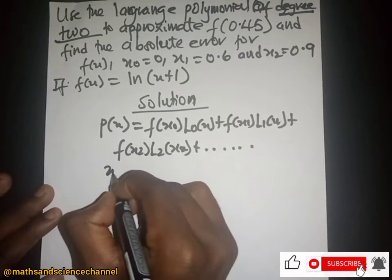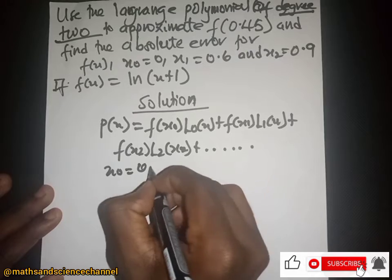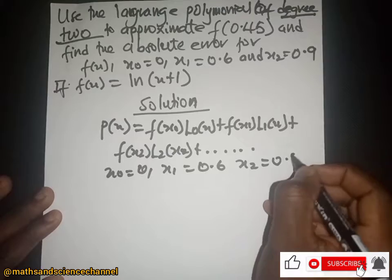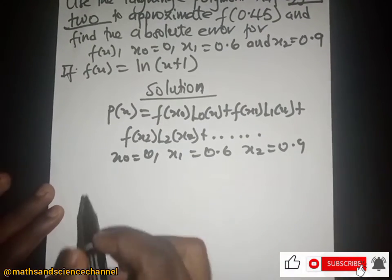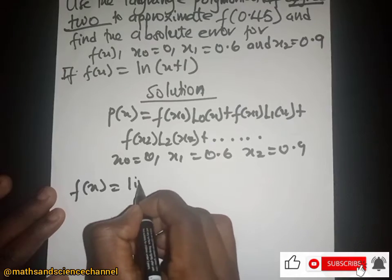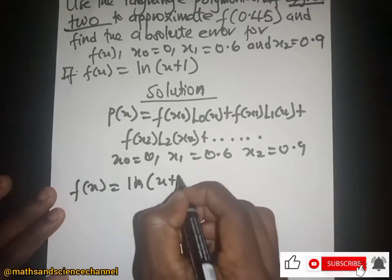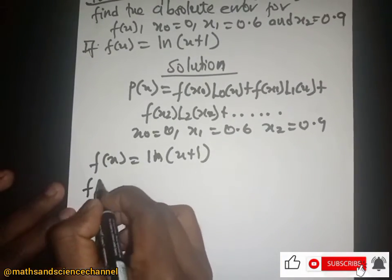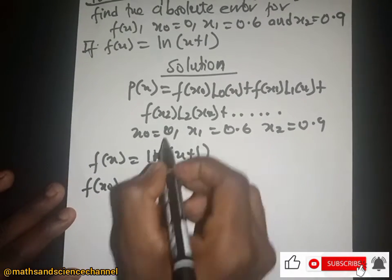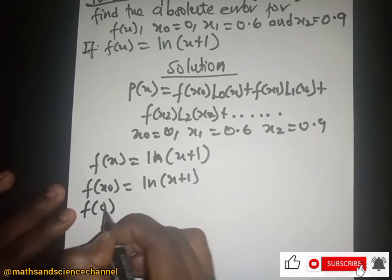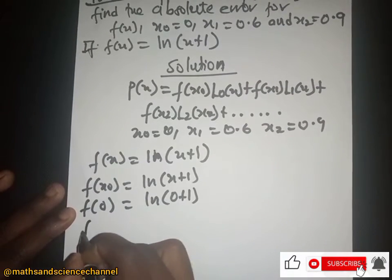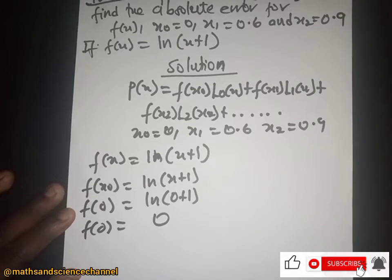We are given that s₀ = 0, s₁ = 0.6, and s₂ = 0.9. For the function f(s) = ln(s+1), we compute f(s₀): substituting s₀ = 0 gives ln(0+1) = ln(1) = 0.